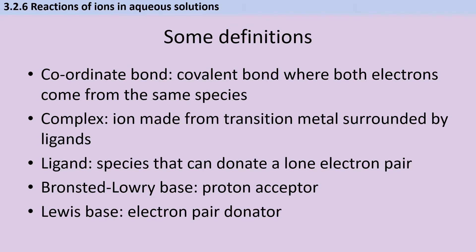A complex is an ion made from a transition metal, either an atom or an ion, which is surrounded by some ligands. Ligands are species that can donate a lone electron pair, so that could be something like water, ammonia, or a chloride ion. A Brønsted-Lowry base is a proton acceptor, and a Lewis base is an electron pair donator.